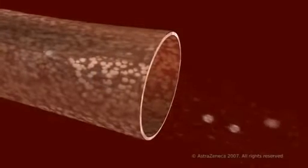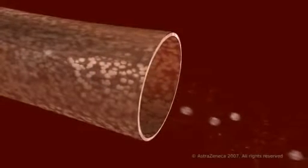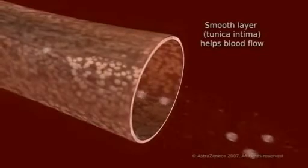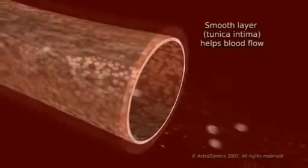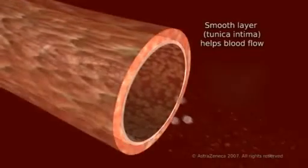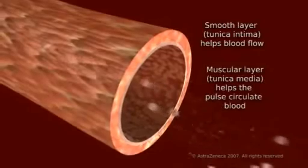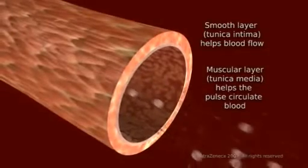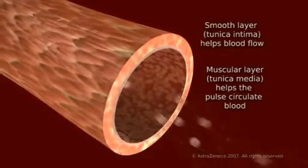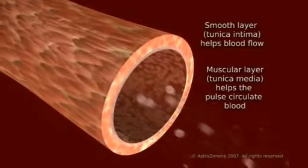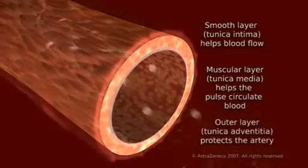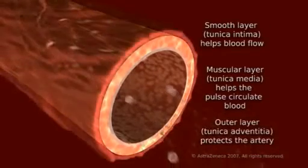A normal artery wall consists of three main layers: a thin, smooth layer that lines the inside of the artery to help blood flow; a muscular, elastic layer that helps the artery pulse to push blood around the body; and a tough outer layer to protect the artery.